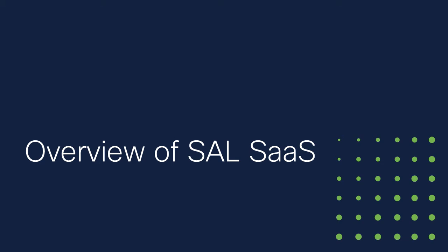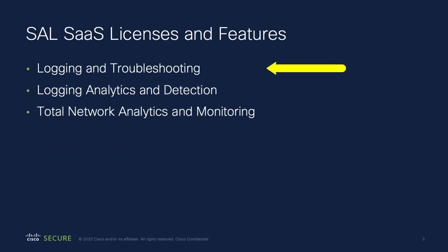From the event logging page in CDO, you can review those events to gain a clear understanding of what security rules are being triggered in your network. This level of SAL functionality is provided with the basic logging and troubleshooting license.